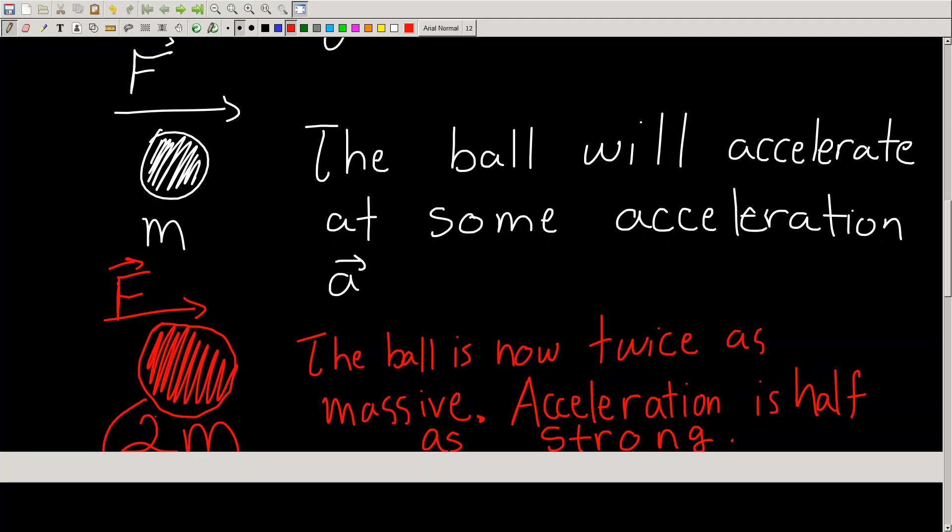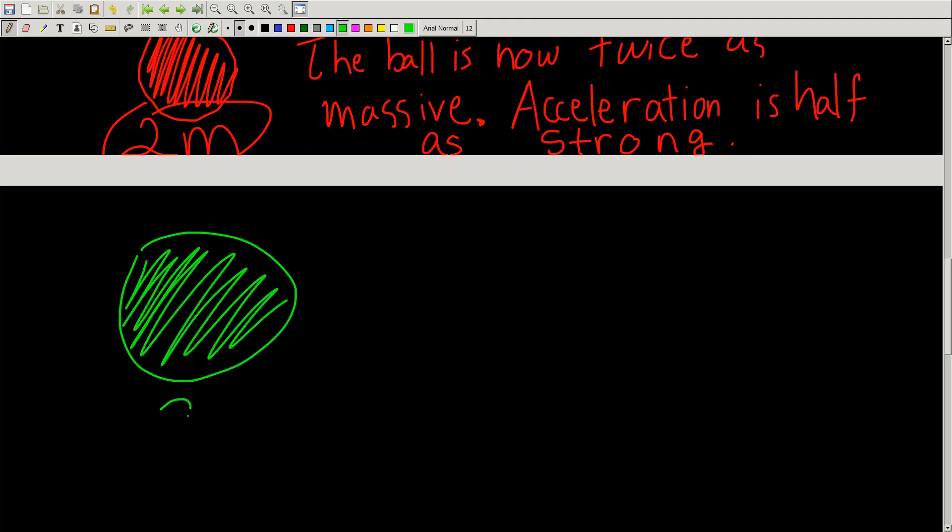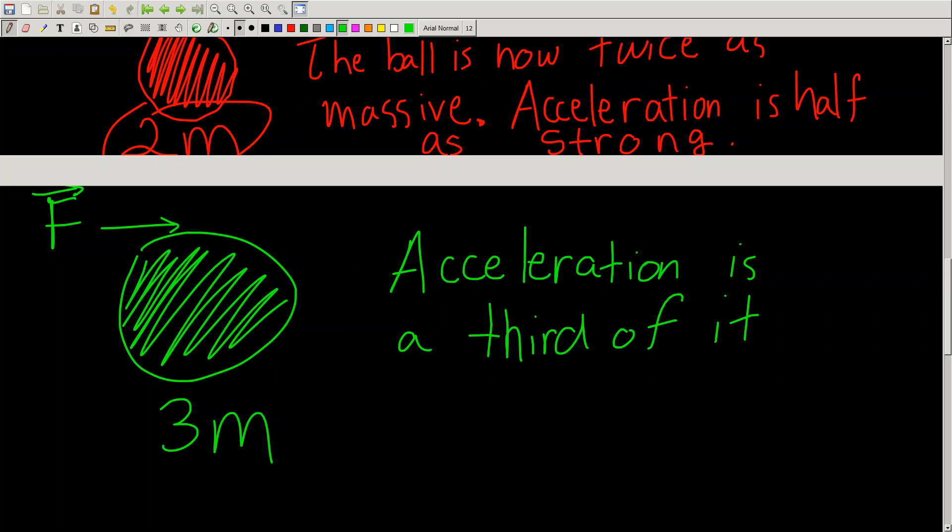So here, we have a case where the mass is doubled, and the acceleration is half as strong. So what if the mass were tripled? So let's talk about a green ball. Now the green ball has three times the mass, but the same force F is applied. Well, now, you guessed it. The acceleration is a third of what it used to be.